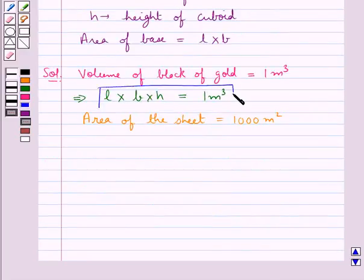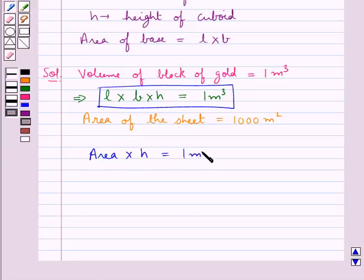This means that L into B into H is equal to 1 meter cube. Now, we have the area of the sheet is 1000 meter square. So, 1000 meter square into H is equal to 1 meter cube.